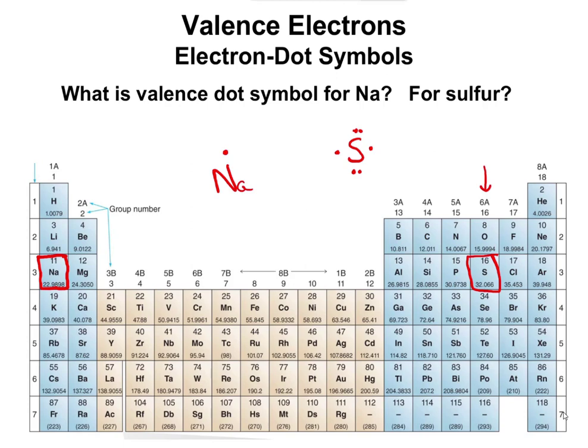So whether we draw sulfur, we could exchange that for oxygen or selenium, right? Anything in group 6A is going to have the same configuration. You just change the symbol in the middle. Similarly for sodium, we could draw sodium that way, lithium, hydrogen, potassium, rubidium, they would all look the same. It's just a different symbol.